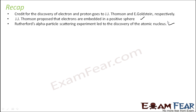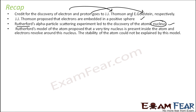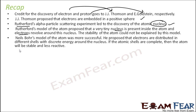So the discovery of the nucleus is by Rutherford. Electron by Thomson, proton by Goldstein. Rutherford's model proposed that there is a tiny nucleus for every atom and the electrons revolve around this nucleus, but the stability of the atom could not be explained with this model.